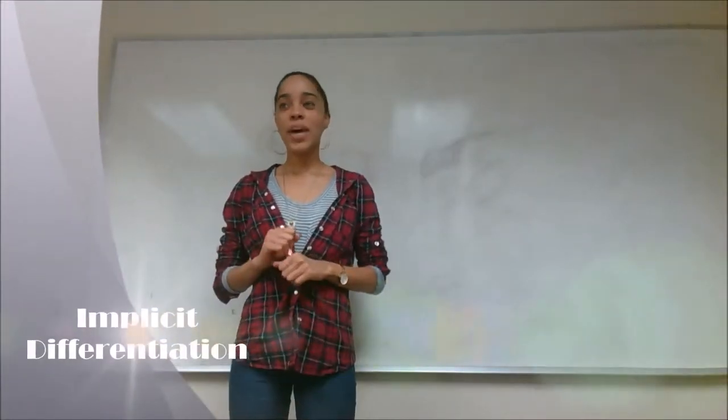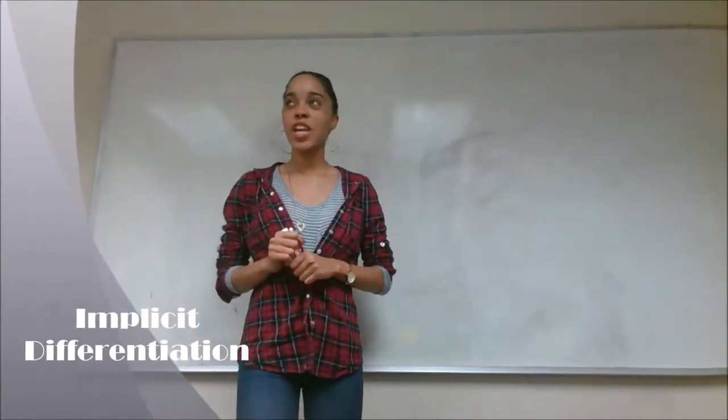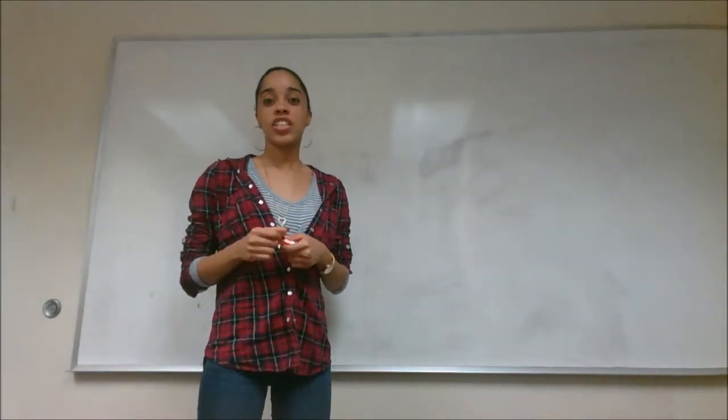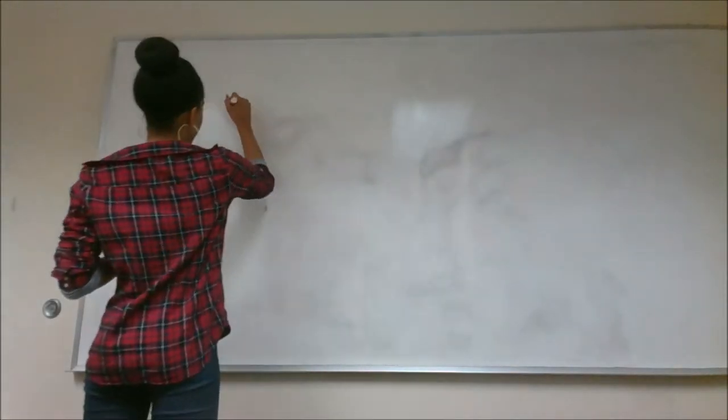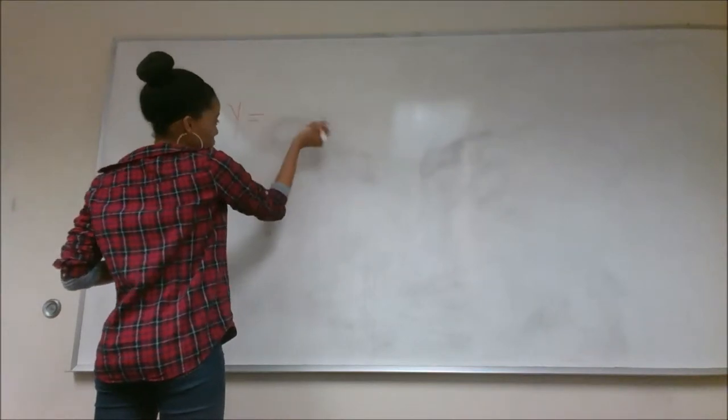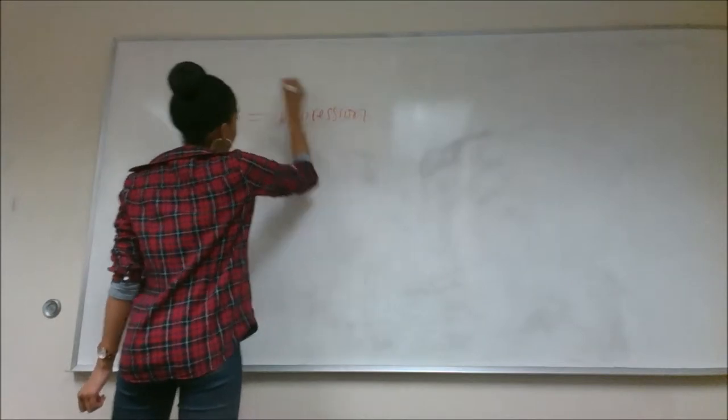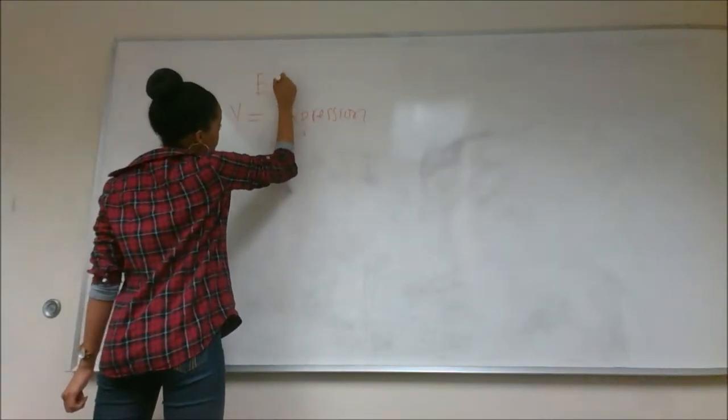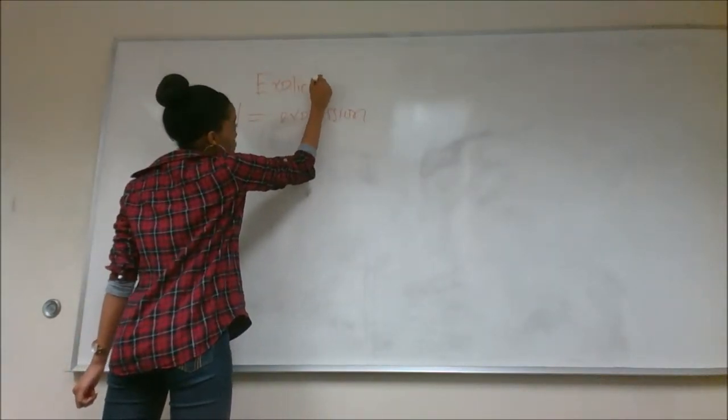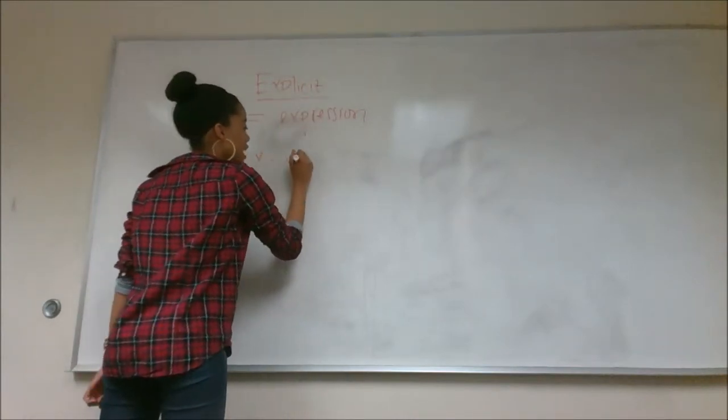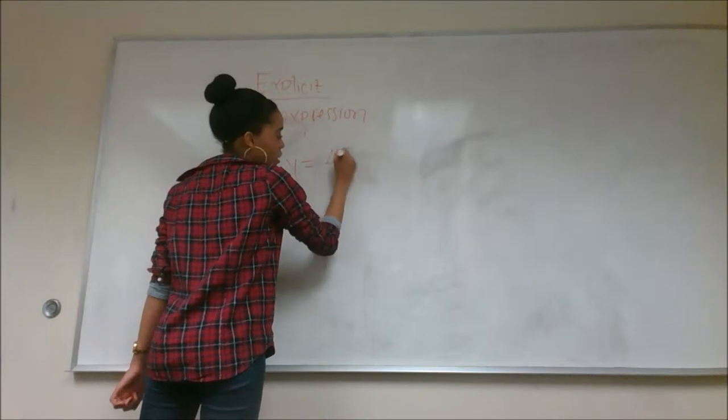Hi class. Today we're going to be talking about implicit differentiation. So as most of you guys know, you're familiar with explicit differentiation, and that comes in the form of y equals some x expression. And like I said, this is explicit. So an example of this would be, let's say you have y equals 4x squared.